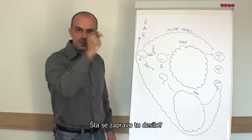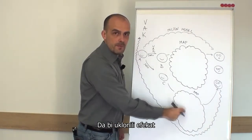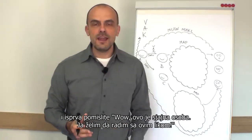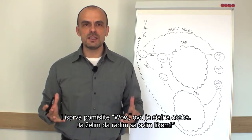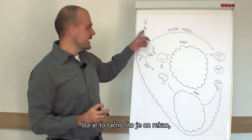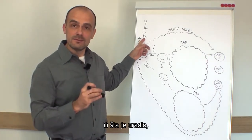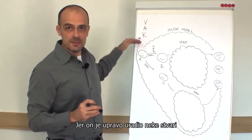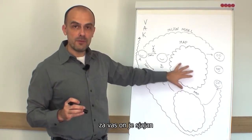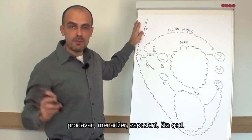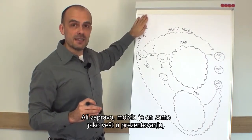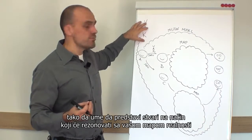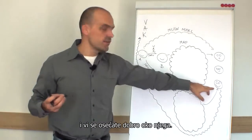Concrete info — what actually happened there? To remove the effect of our maps influencing the concrete info. For example, you meet someone and say, 'Wow, this is a great person, I want to work with this guy.' Then you ask: what exactly did this guy say or do that made you decide he is great? Because this guy just did some things, and based on what you have in your map of reality, for you he is great. But maybe he is actually a very skillful presenter or salesperson who can present things in a way that resonates with your map of reality and you feel good about him.